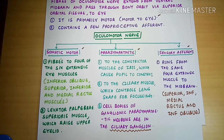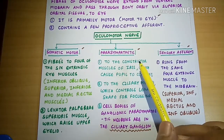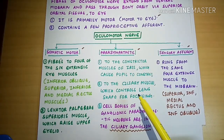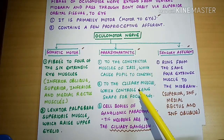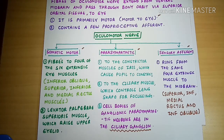In summary, the oculomotor nerve has three divisions. The somatic motor division supplies four extrinsic eye muscles and the levator palpebrae superioris. The parasympathetic division supplies the iris muscles, causing pupil constriction, and the ciliary muscles for accommodation, with the ciliary ganglion as its ganglion. The sensory afferent fibers carry proprioceptive information from those four muscles back to the midbrain.